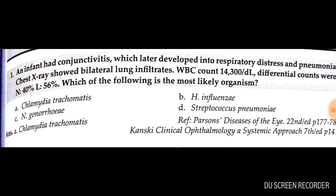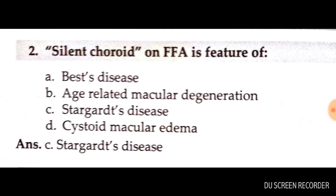Question number 1: an infant had conjunctivitis which later developed into respiratory distress and pneumonia, with chest X-ray showing bilateral lung infiltrates. WBC count 14,300; differential: neutrophils 40%, lymphocytes 56%. Which organism is most likely? It is Chlamydia trachomatis — option A is correct.